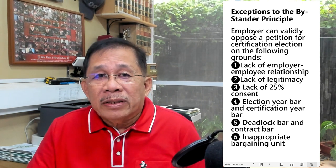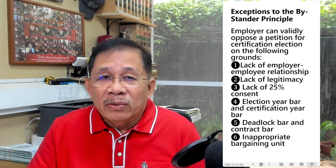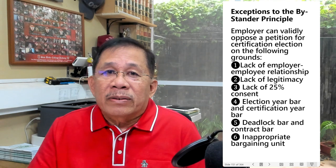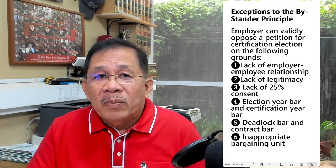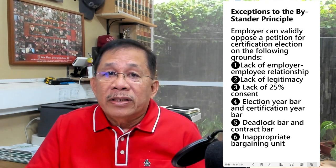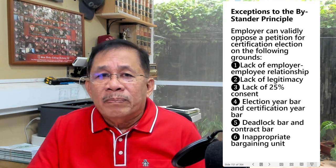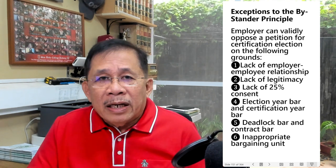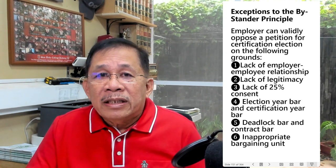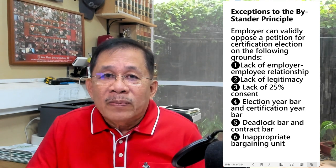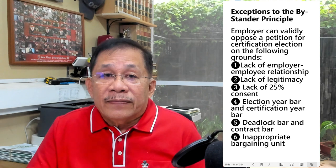Also, an employer can validly oppose a petition for certification election if the petition is not supported by the written consent of 25% of the employees in the bargaining unit. This refers only to organized establishments. The absence of the 25% consent is an indication that the petitioning union does not represent a group of employees who have substantial interest in the certification election.